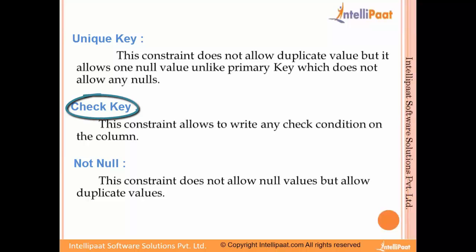The check constraint allows you to write any check condition on a column. For example, suppose in a department table there is a department column and you want only two values — HR and Finance — to be filled in. By applying a check constraint on that column, the user can insert only those two values; apart from these, any other value will not be accepted. Similarly, you can specify a salary bucket for a particular department, and the user will not be able to insert a value less or more than that bucket.